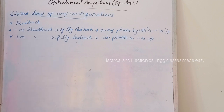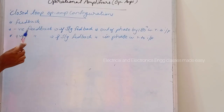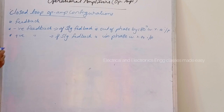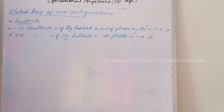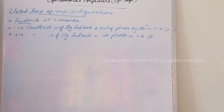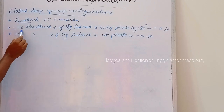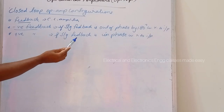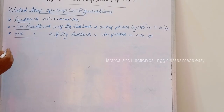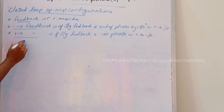Welcome to class. Today's class is a continuation of op-amps. In previous classes we discussed about op-amps and open-loop configurations. Next is closed-loop configurations. An op-amp that uses feedback is called a closed-loop amplifier. If the feedback signal is out of phase by 180 degrees with the input, it is called negative feedback. If the feedback signal is in phase with the input, it is called positive feedback.